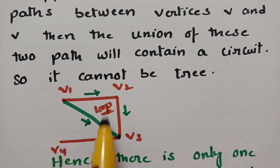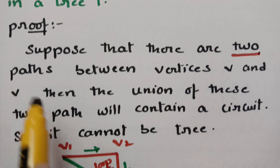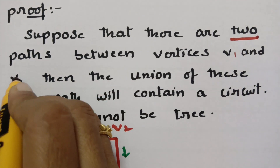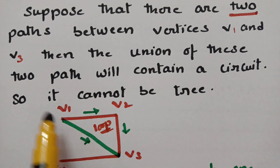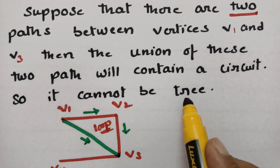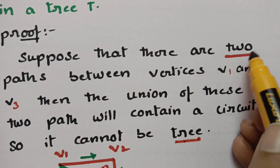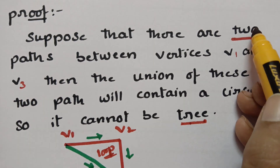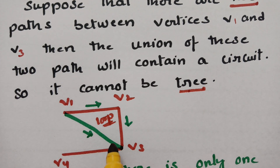This is the logic you have to find. Suppose there are two paths between the vertices — say v1 and v3. The union of these two paths will make a circuit, and so it cannot be a tree. When we take two paths it cannot be a tree. If we take a single path then it's going to be a tree. Taking two paths forms a circuit or a loop, which is not at all a tree.